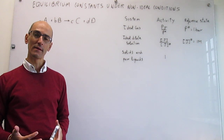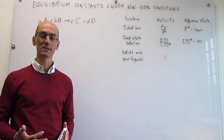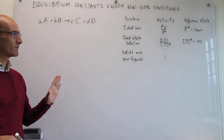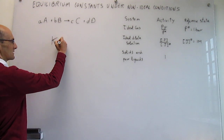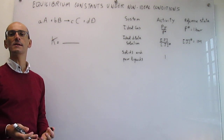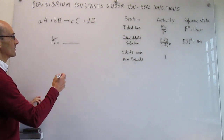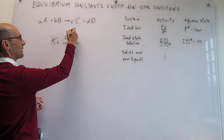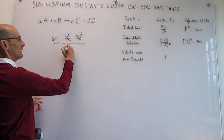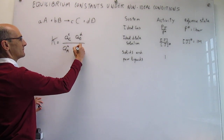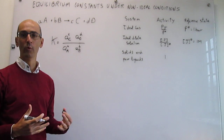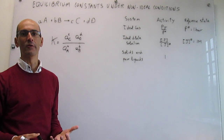Until now, everything that we have done with regards to writing equilibrium constants has considered ideal conditions. Let's think about this chemical reaction and see how that works. We can write the equilibrium constant for this process as simply the ratio of activities of products over reagents elevated to the power of the stoichiometric coefficients — the activity of C to the power of its stoichiometric coefficient, product D to the power of D, divided over reagents. This is a general placeholder way to write the equilibrium constant and it works universally well.